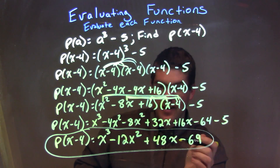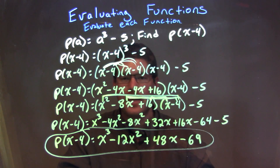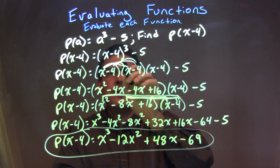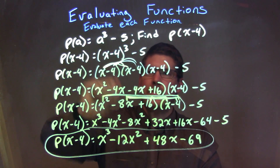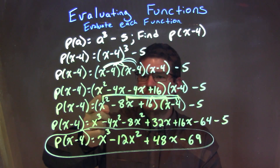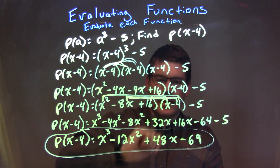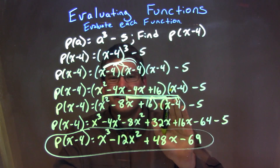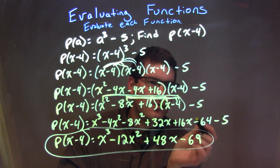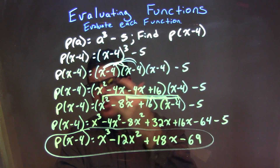Let's recap. We have p of a equal to a to the third minus 5, and we want to find p of x minus 4. Every single time I see an a, I plug in x minus 4. So I have p of x minus 4 equal to x minus 4 all to the third power minus 5. x minus 4 to the third is x minus 4 times itself three times. I distributed x minus 4 times x minus 4 to get x squared minus 4x minus 4x plus 16, simplified to x squared minus 8x plus 16. Then I multiplied that by x minus 4, getting x to the third minus 4x squared minus 8x squared plus 32x plus 16x minus 64, bringing down the minus 5, and simplified by combining like terms to get the final answer.